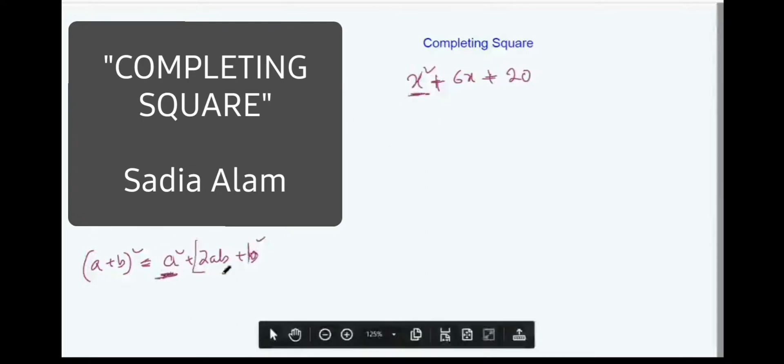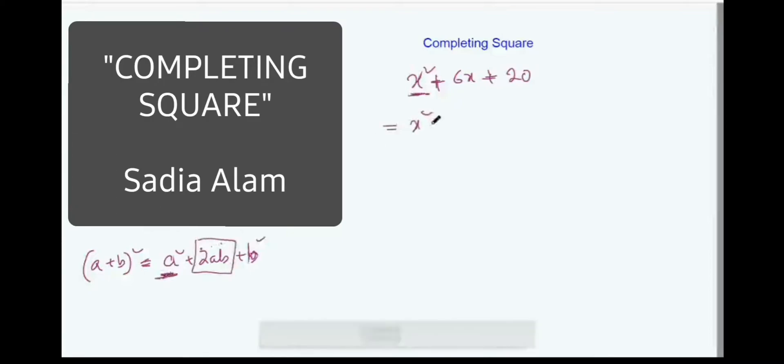Next we need 2ab. So a is x, b is something you need to choose so that overall this thing is equal to 6x, because we have to compare with the first equation. Both of the equations will have to be the same, right? So to make it six we have to take three.